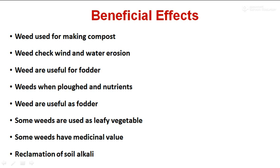Weeds are useful as fodder for animals. Some species are used as scarcity fodder under famine conditions. Certain weeds like Hariyali, Shivra, and Amaranthus species are used as fodder. When ploughed into the soil, many leafy weeds act as green manures, increasing humus and nutrients. Weeds like Bauchi and Gokhuru contain about 3–3.5% nitrogen on a dry weight basis. Leguminous weeds like Shivra, Patata, Senji, and wild legumes add nitrogen to the soil by fixing atmospheric nitrogen.